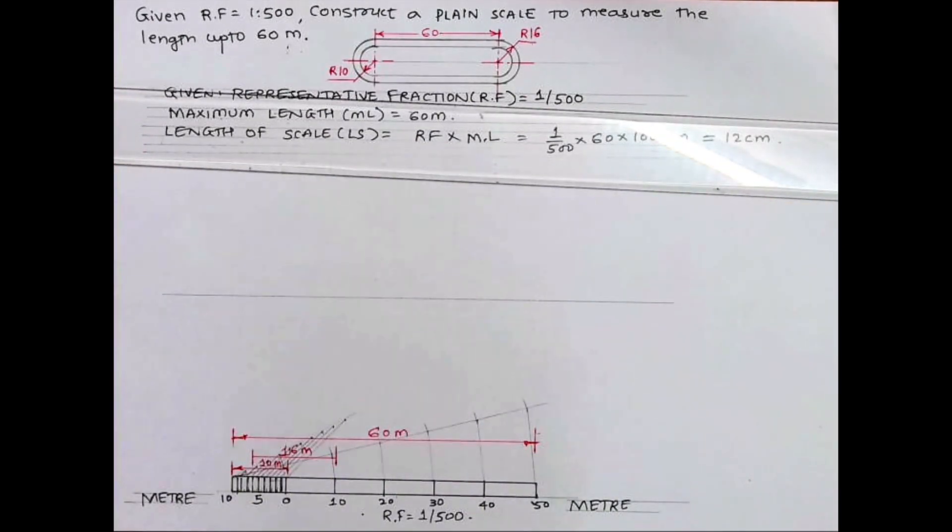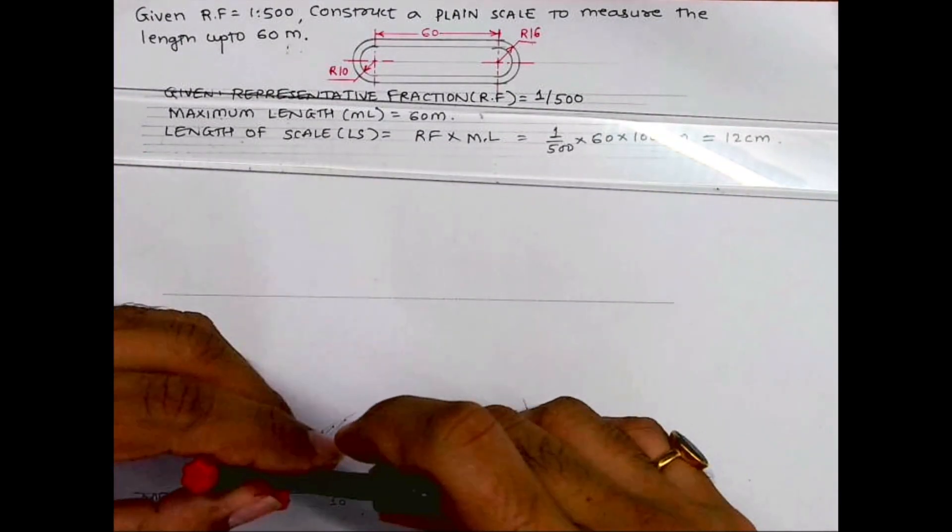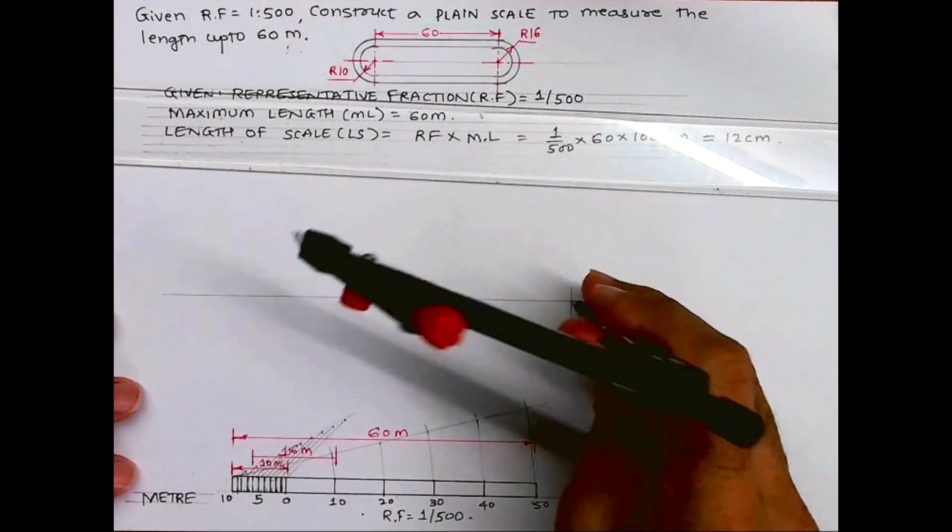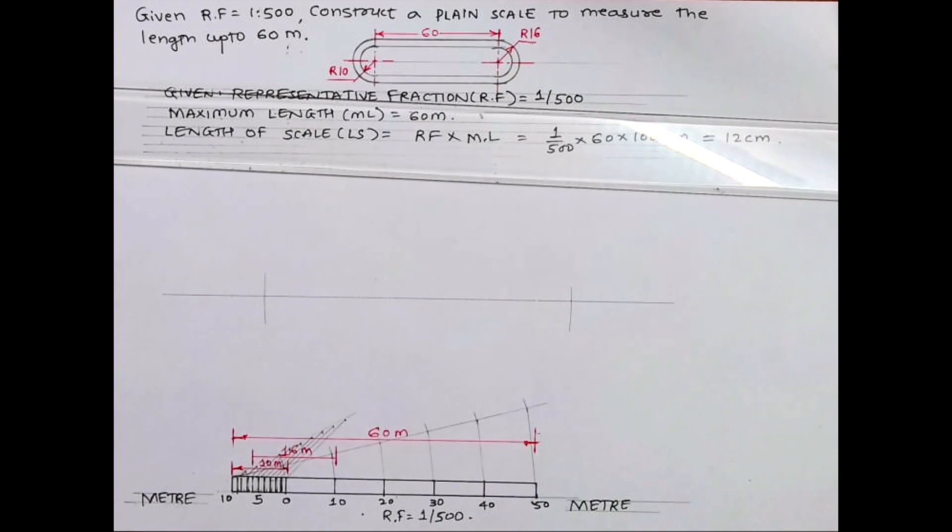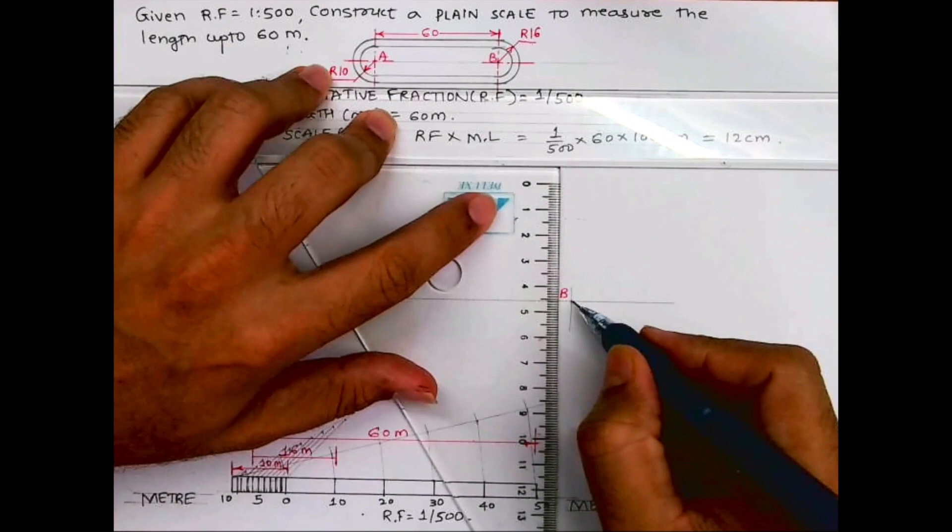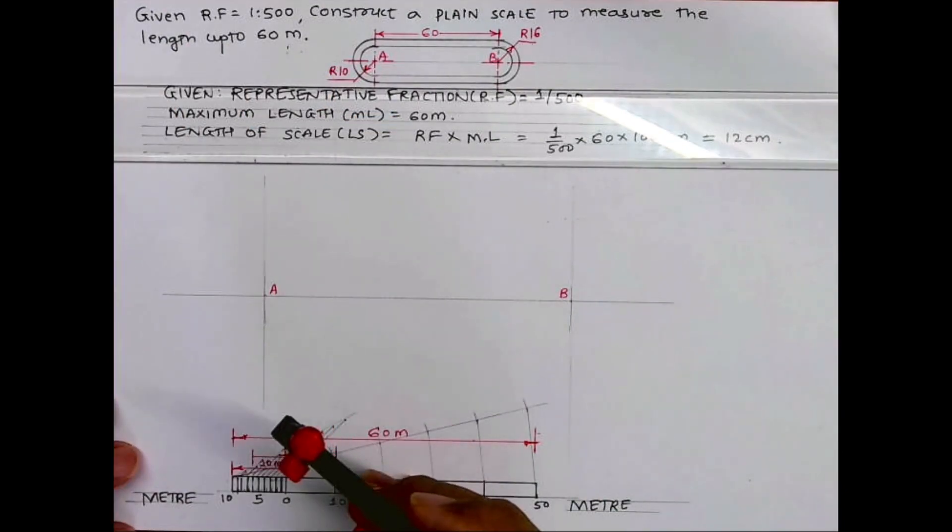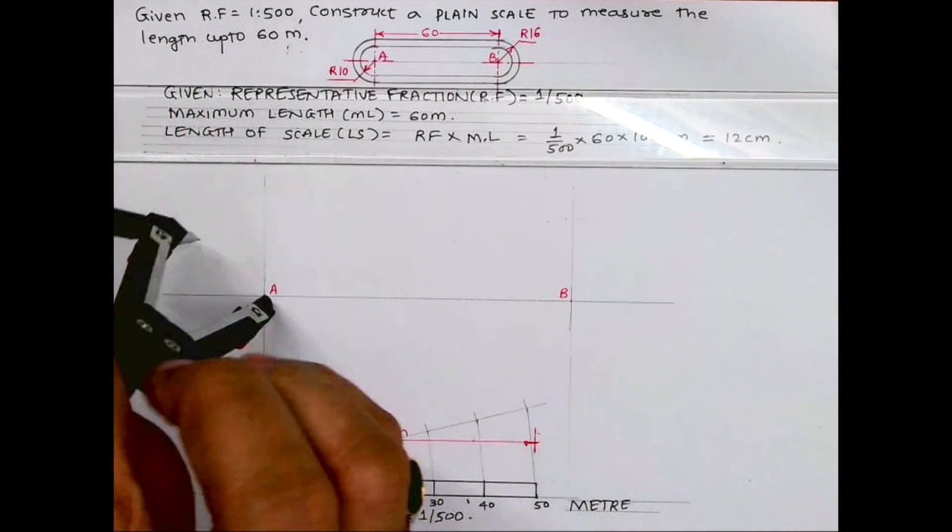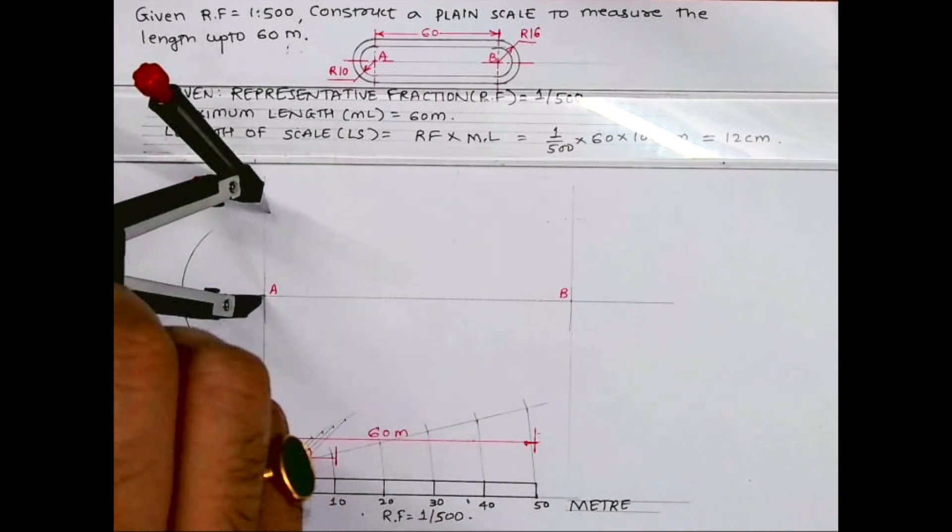It's a jogging track. We need to take length 60 and cut. Let's say this is point A and B. We'll draw vertical lines from A and B. Then we'll take 16 meters and from A we'll cut 16, and from B we'll cut 16.